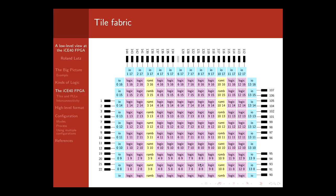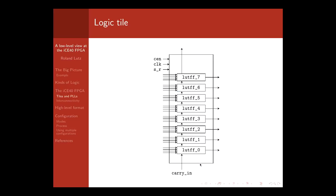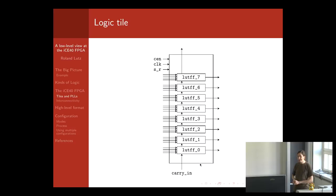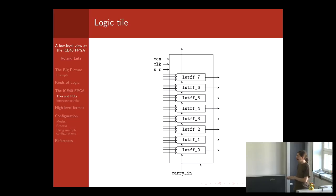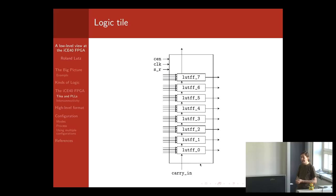Zooming into one of the logic tiles, you can see it contains eight logic cells, each composed of a lookup table and a flip-flop. Each logic cell can have up to four inputs and has one one-bit output, so the logic tile as a whole can output one byte of data. There is also a carry signal which goes from one logic cell to the next and from the last logic cell to the first of the next logic tile. There are three special inputs shared by the logic tile: a clock signal, a clock enable signal, and a set/reset signal.